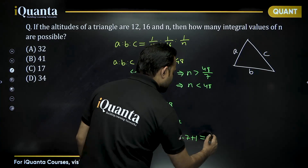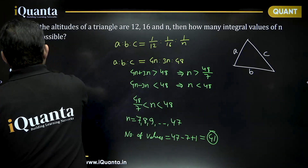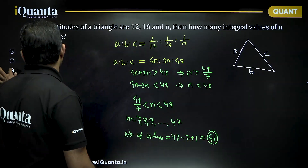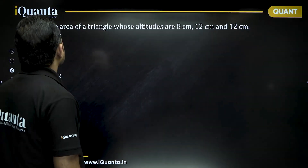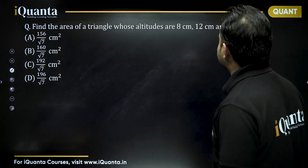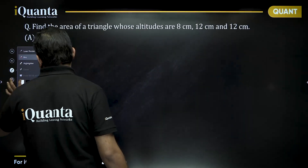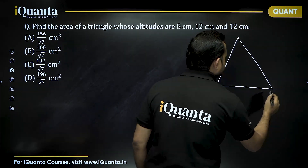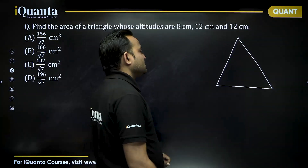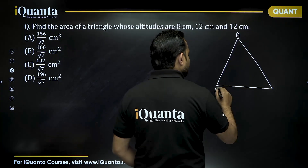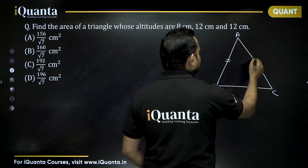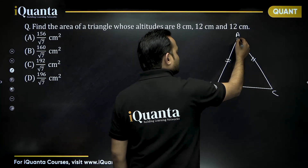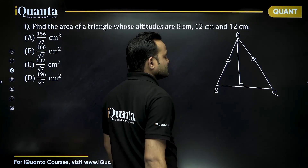Next question: find the area of a triangle whose altitudes are 8 cm, 12 cm, and 12 cm. Since two altitudes are equal, two side lengths will be equal, so the triangle is isosceles. Let the triangle be ABC where AB equals AC. The unequal altitude, which lies on the unequal side BC, will be 8. Let D be the foot of the altitude from A, so AD = 8.